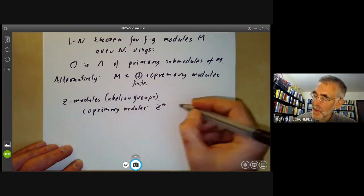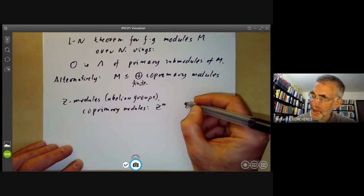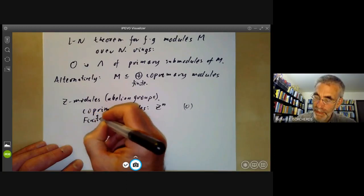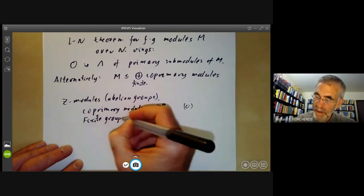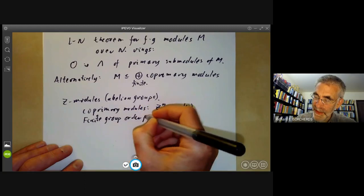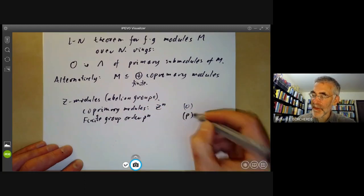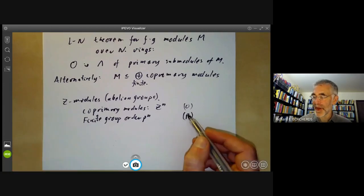Or any finite group of order p^n for some p, and this is a co-primary module whose associated prime ideal is p.